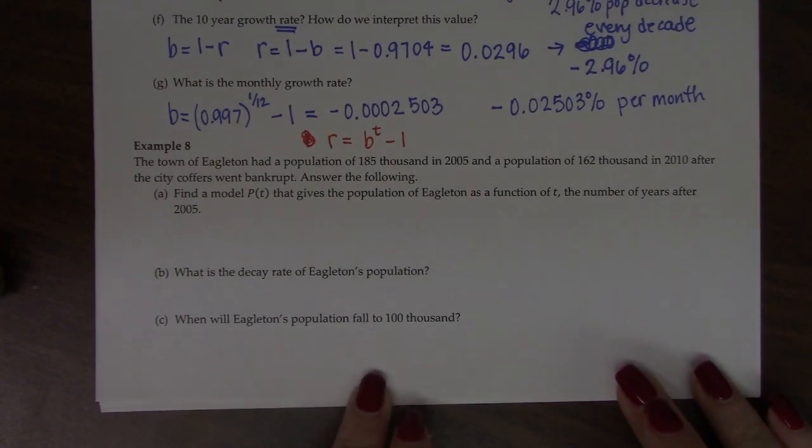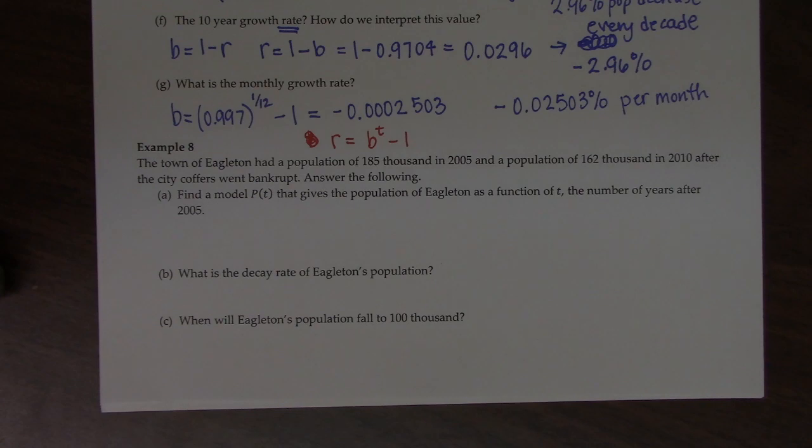So, the town of Eagleton had a population of 185,000 in 2005 and a population of 162,000 in 2010 after the city coffers went bankrupt. Answer the following. Find the model that gives the population of Eagleton as a function of t, the number of years after 2005.